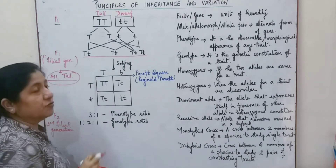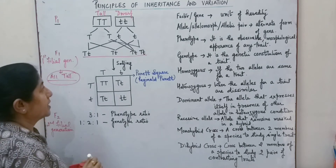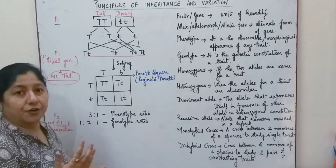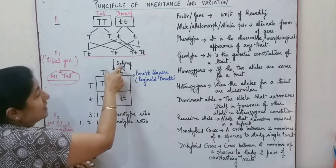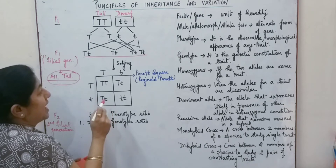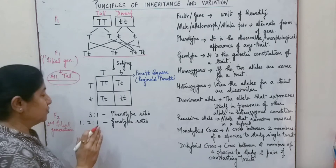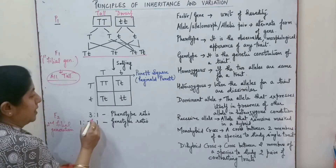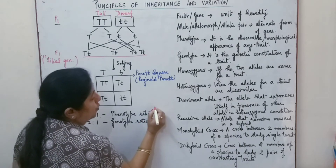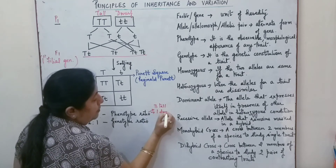This generation was named the F1 generation or first filial generation. To understand the pattern of inheritance, he self-pollinated the F1 generation and found that plants obtained in the F2 generation were three tall and one dwarf. So the phenotype ratio showed three tall plants and one dwarf plant.